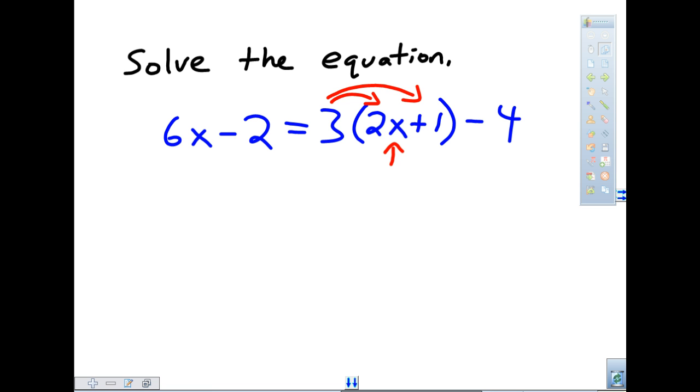So the first step here is to get this x out of the parentheses by distributing the 3. When we distribute the 3, the result will end up being 6x plus 3 on the right-hand side. So ultimately, we end up with the equation becoming 6x minus 2 equals 6x plus 3. That's from distributing the 3. And then the minus 4 just gets copied down.